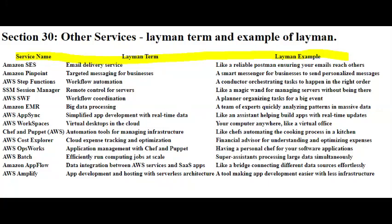This way, you don't have to worry about every detail. The event planner, SWF, takes care of orchestrating the entire process. In the end, your event runs smoothly without you having to micromanage every aspect. Similarly, AWS SWF helps you automate and manage workflows in your applications or systems, ensuring tasks are completed in the right order and without manual intervention.